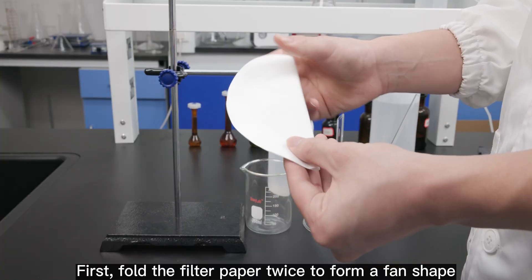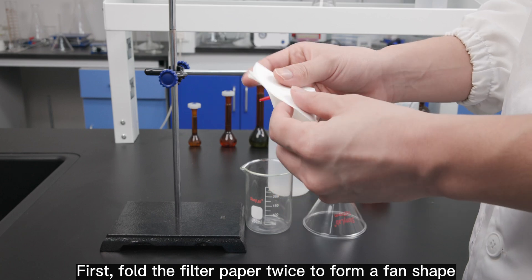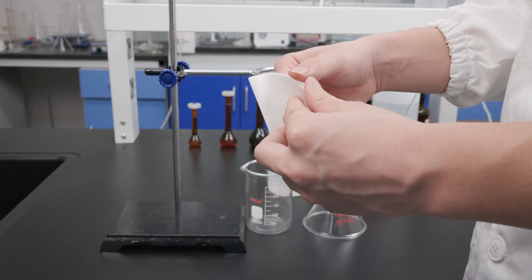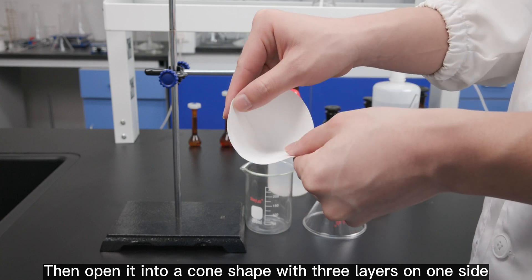First, fold the filter paper twice to form a fan shape. Then, open it into a cone shape with 3 layers on one side.